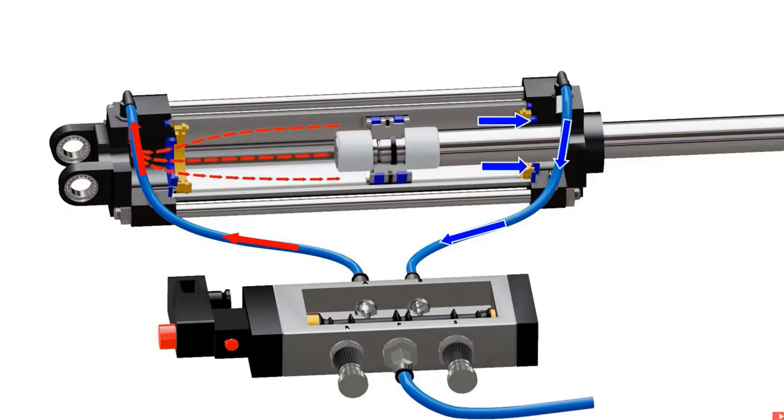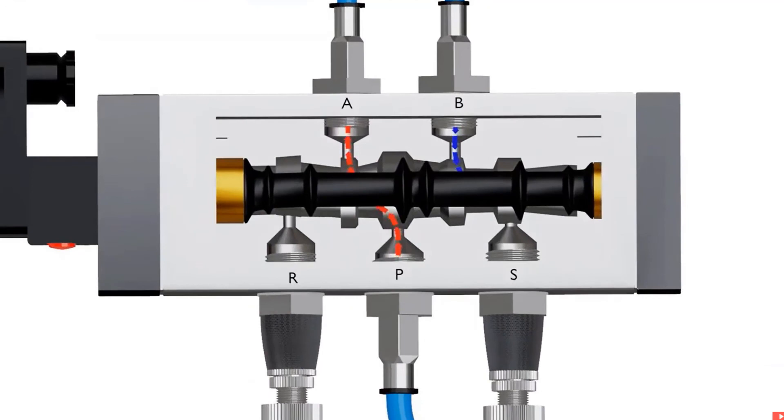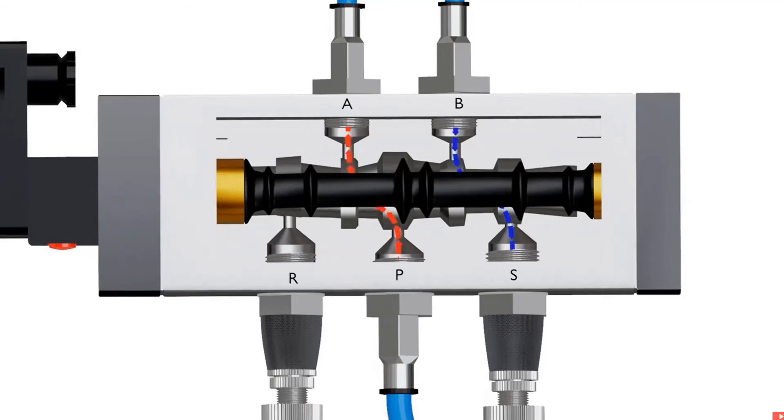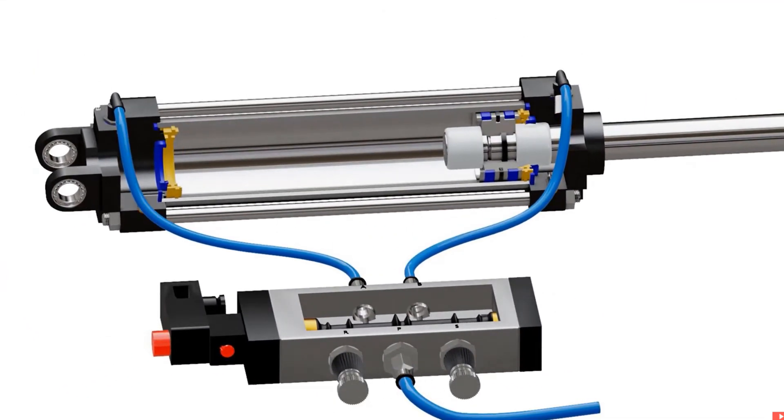This exhaust gas travels through the other hose and reaches the valve. The valve directs this gas towards port S and allows it to escape through pneumatic muffler. The gas muffler helps reduce any noise produced during exhaust. The process we just observed is the extension stroke of actuator.